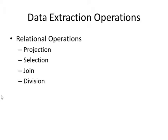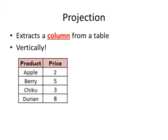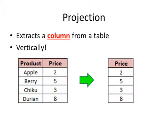For the second set of data extraction operations, we have the relational operations: projection, selection, join, and division. These are more commonly used in databases. The first operation is projection, which basically extracts a column from a table. Given the example shown, if we perform a projection on this table, we will get the result of a single column — for example, the price column. The projection operator is a vertical operation.